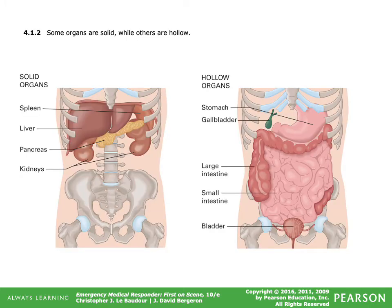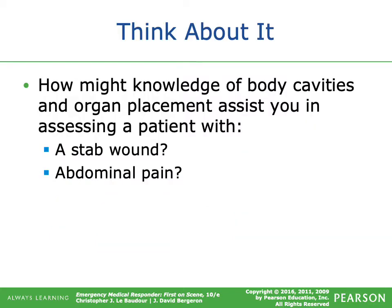Some organs are solid while others are hollow, which becomes very important when dealing with trauma — we'll get into that in our trauma section. Knowing the body cavities and organ placement helps you assess a patient with a stab wound or abdominal pain — you can identify which underlying organs may be damaged or in distress based on the location of the wound or pain.